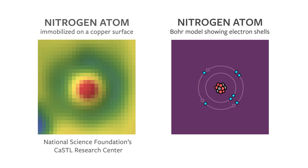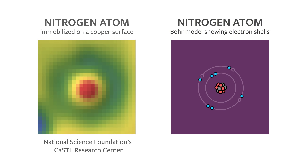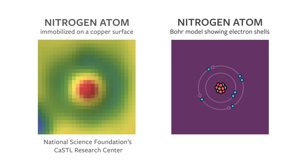Here to the right we see a simplified model of the same nitrogen atom. This type of model is called the Bohr model, named after the physicist Niels Bohr. Other models do exist which are more accurate, but when first being introduced to chemistry, the Bohr model is the easiest to make sense of, and so it's what we will be using here.